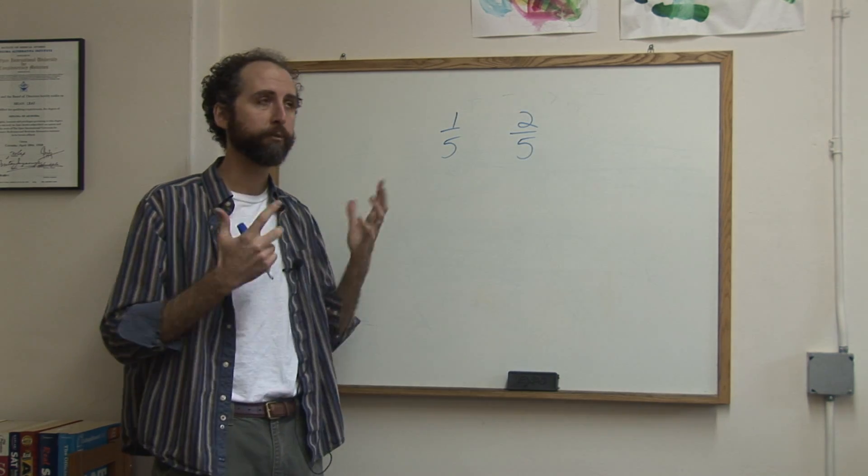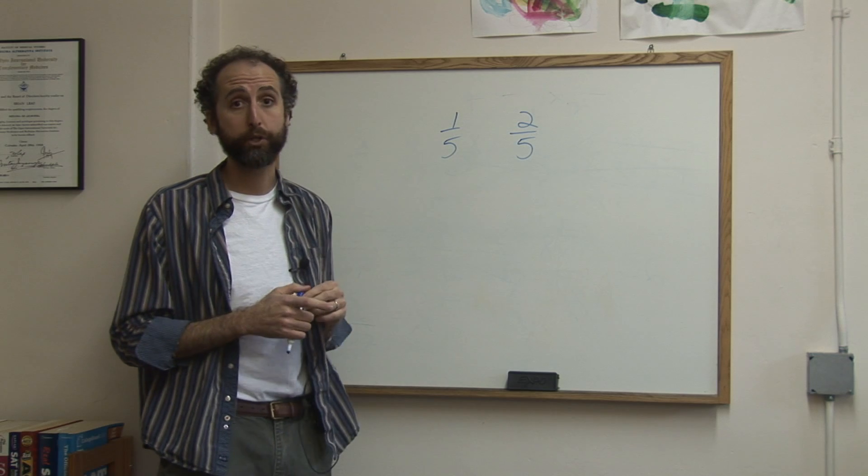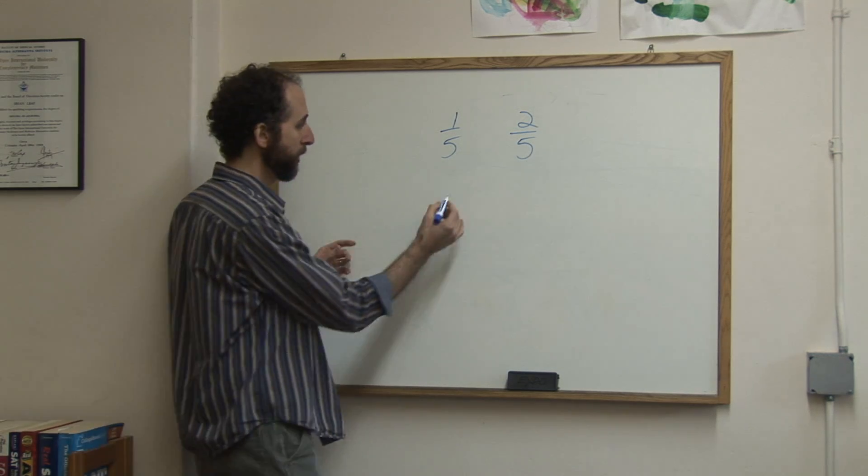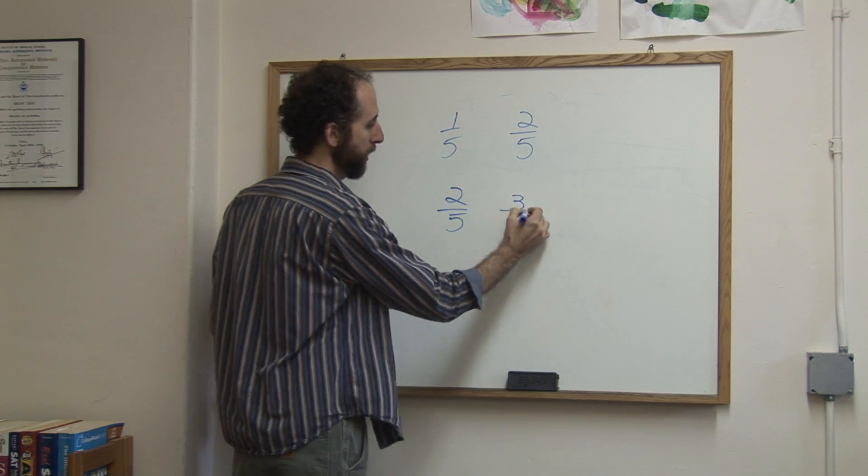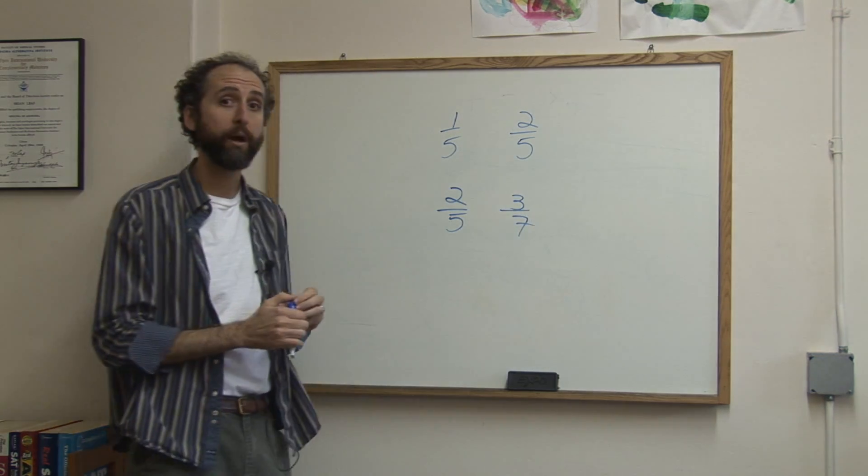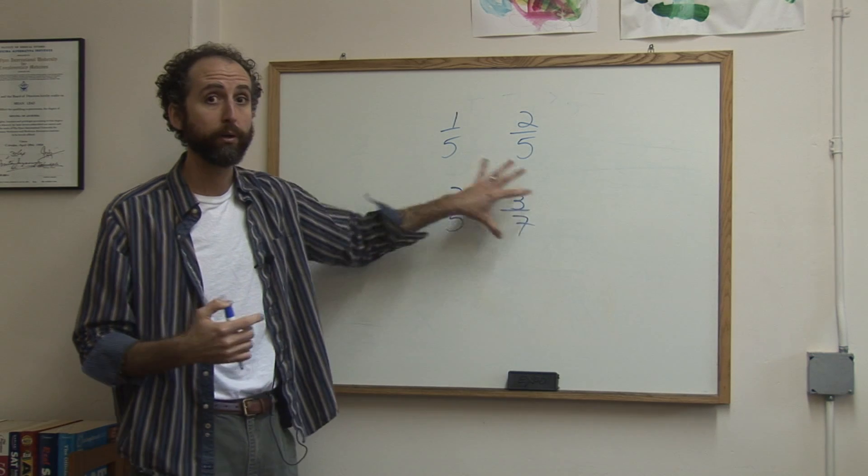It gets a little bit more confusing for people when the bottom numbers don't match up. But it really doesn't have to be confusing. Let's say you have two-fifths and three-sevenths and you want to compare them. It's a little bit hard to imagine which is bigger.